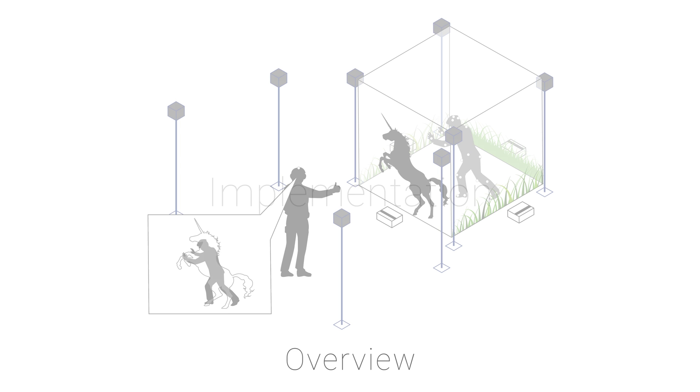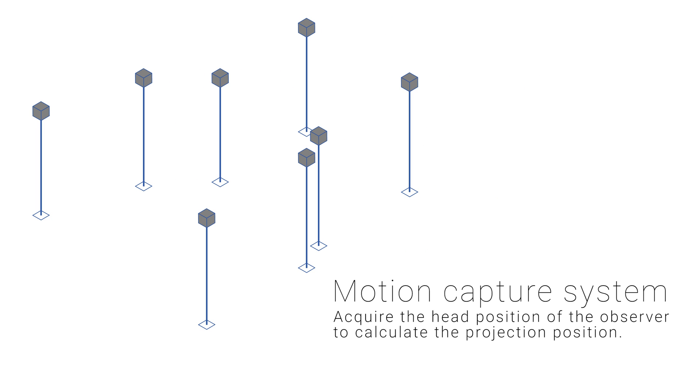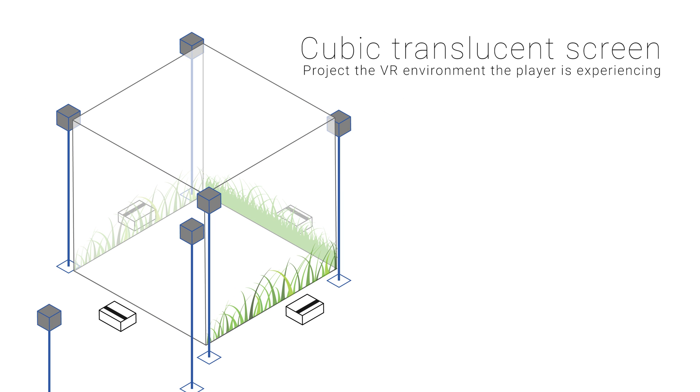Reverse Cave consists of a motion capture system, cubic translucent screen, and projectors. The motion capture system is used to acquire the head position of the observer to calculate the projection position. The VR environment the player is experiencing is projected into the screen.